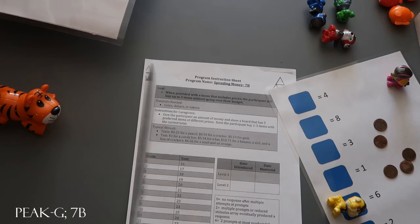So it just kind of depends. You could make it unique to whoever you're doing these programs with. But that just kind of gives you a couple ideas of what you could do with Spending Money 7b from Peak Generalization.